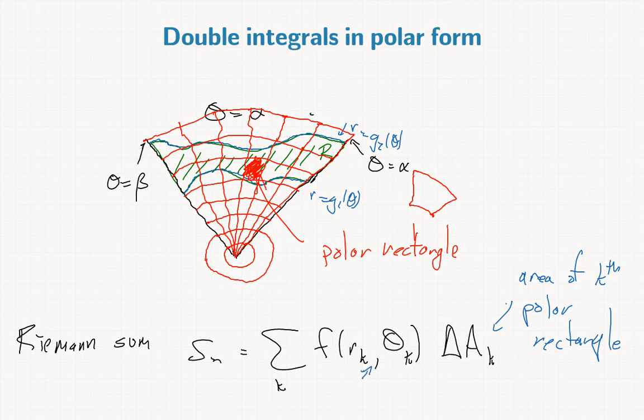r_k, theta_k is a point sampled from the kth polar rectangle. The main thing we need to do is figure out a formula for the area of a polar rectangle.